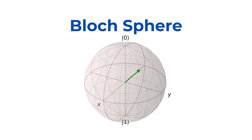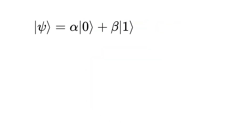Welcome back to another episode of quantum computing. In this episode I want to talk about the Bloch sphere, which is a physical representation of a qubit in three-dimensional space. We know that every two-state quantum system, or qubit, can be represented by alpha ket 0 plus beta ket 1.